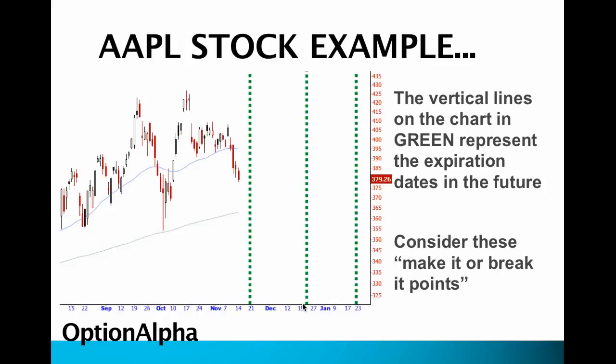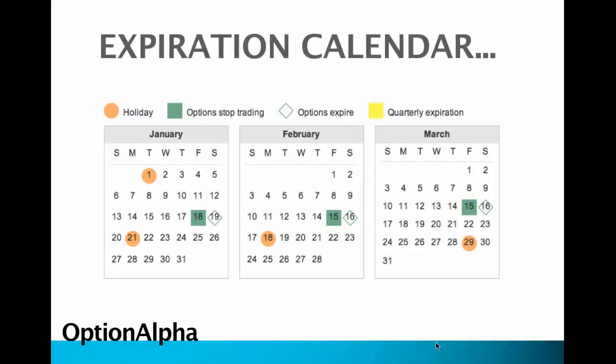You can reverse the order for that options contract and get rid of it before expiration. You don't necessarily have to wait until expiration to make a decision. As always with our membership, we have the expiration calendar right inside of our membership area. It's always updated — in fact, we have it always out for the next three years, so in case you're trading some of those longer-term options, you know exactly when those dates are.